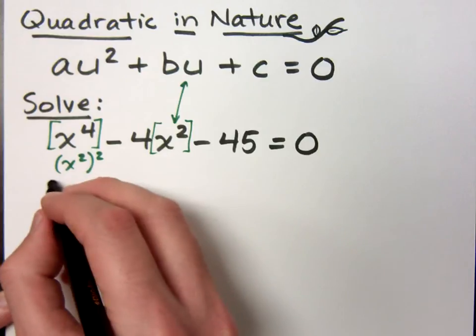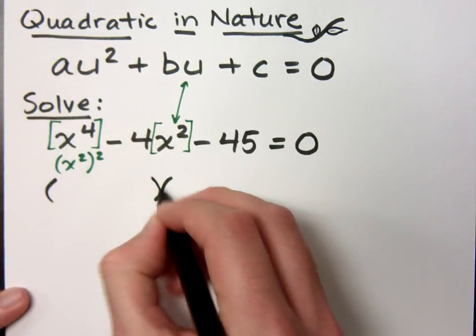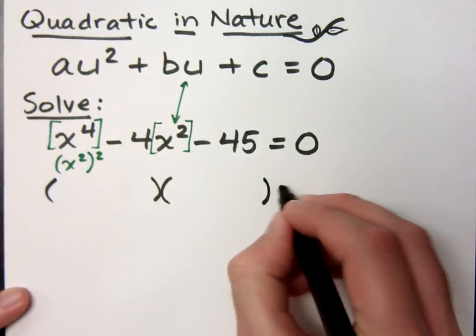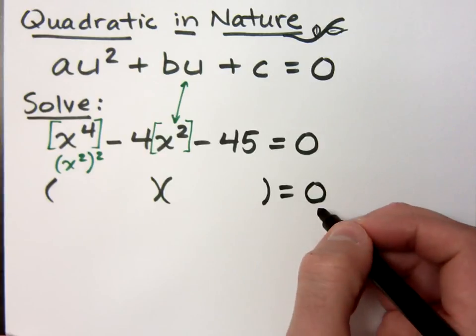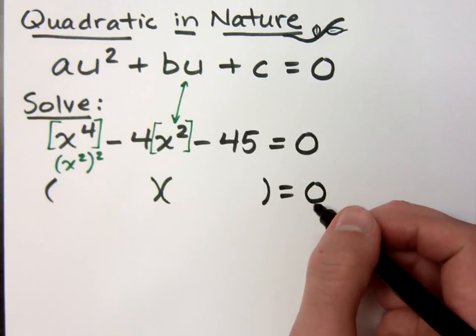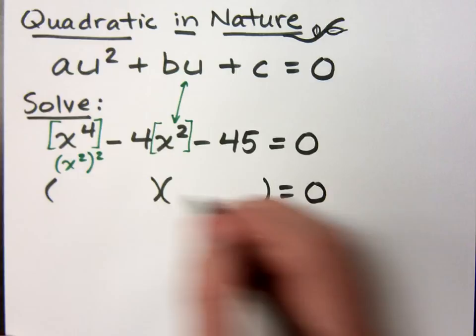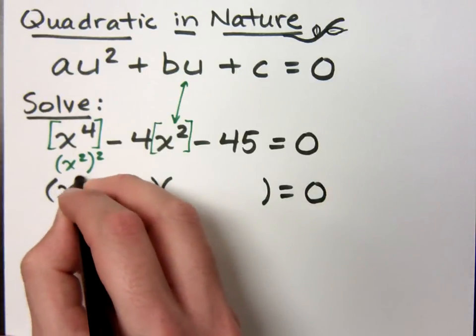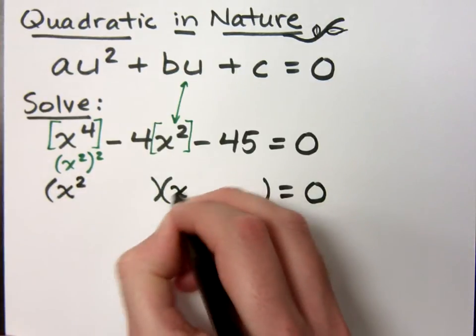So I'm just going to factor this guy. If I had something that was x², we would try to factor that by breaking down the x² evenly to be x and x. However, since I have x⁴, I want to break this guy down evenly. And so I will use x² and x².